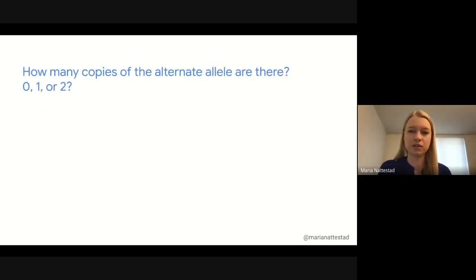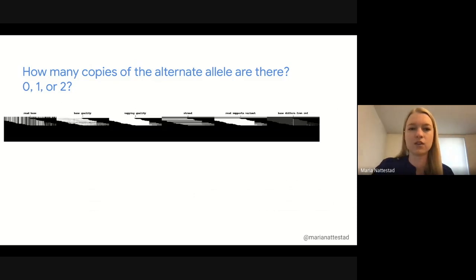Let's play a little game where I'll give you the opportunity to try to call some of these pileup images. I'll do the first slide first so you can see how I think through it. This pileup image, I look at it and see that in the fifth channel, we have read supports variant all lighting up in white, which means ostensibly all of the reads support this variant. I don't see any other issues like base qualities or mapping qualities being bad. So I think this is a two, homozygous alternate.